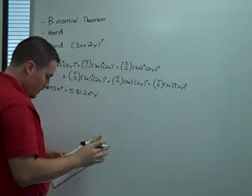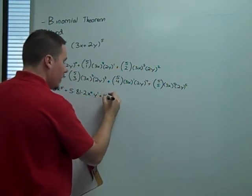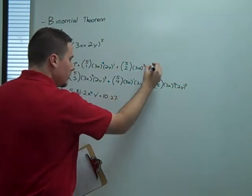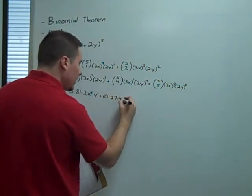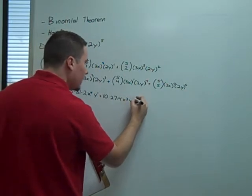For this term, 5 choose 2, we're going to get a coefficient of 10. 3 cubed is going to be 27. 2 squared is going to be 4. x cubed y squared.